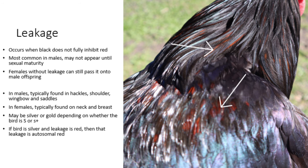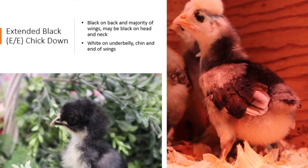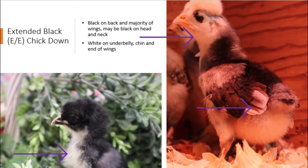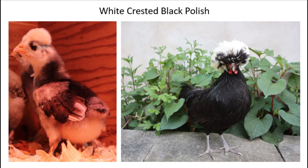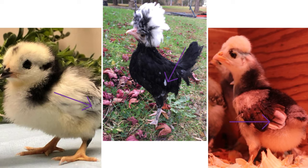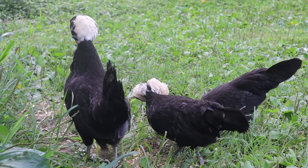Depending on the severity of the leakage, it doesn't always appear in males until they reach sexual maturity. Chicks that are homozygous for Extended Black tend to be black with white or yellow on their underbelly, under their neck, and at the end of their wings. One example is white-crested black Polish, as well as some Sumatras. These white feathers should molt out and regrow as black ones as the bird matures.